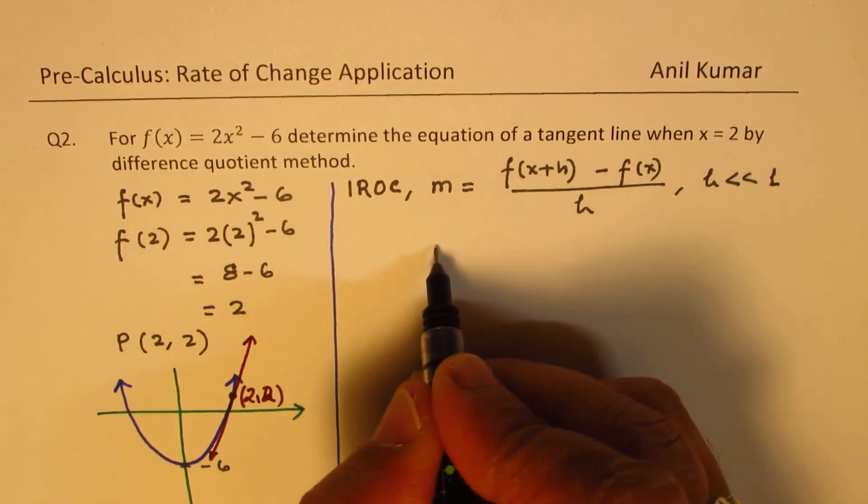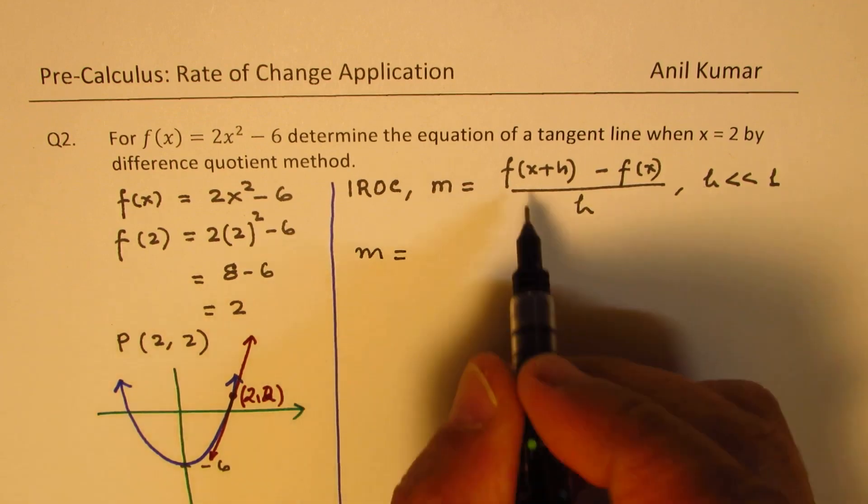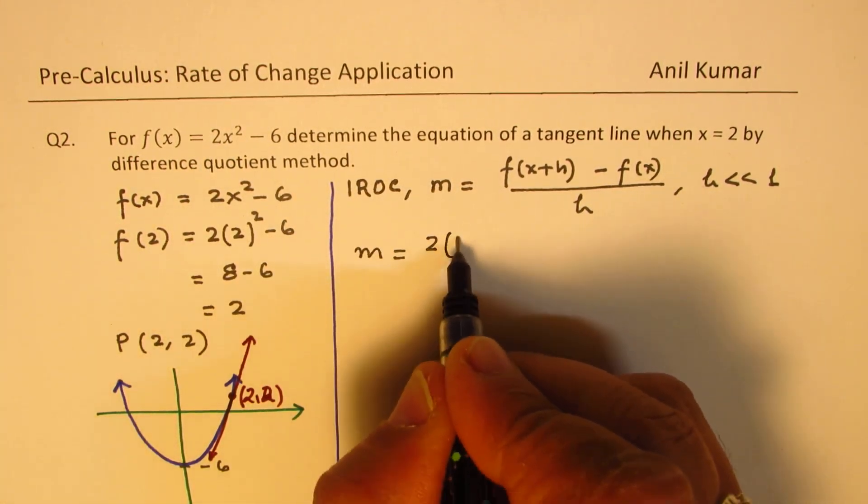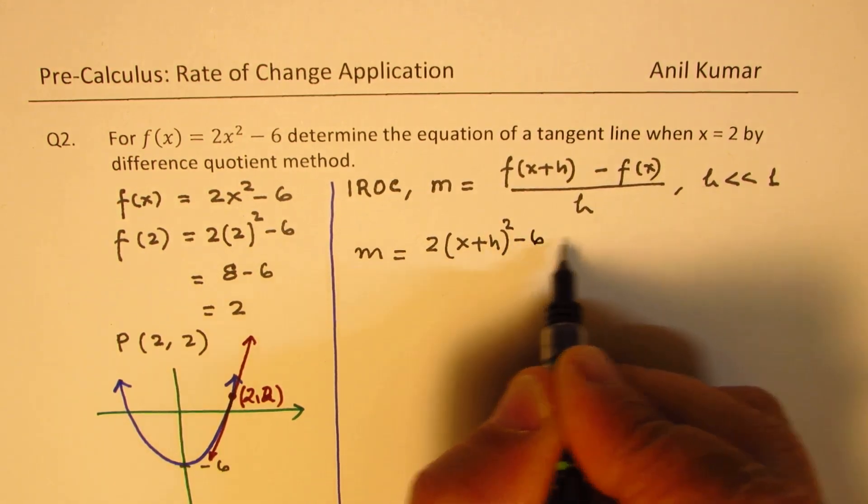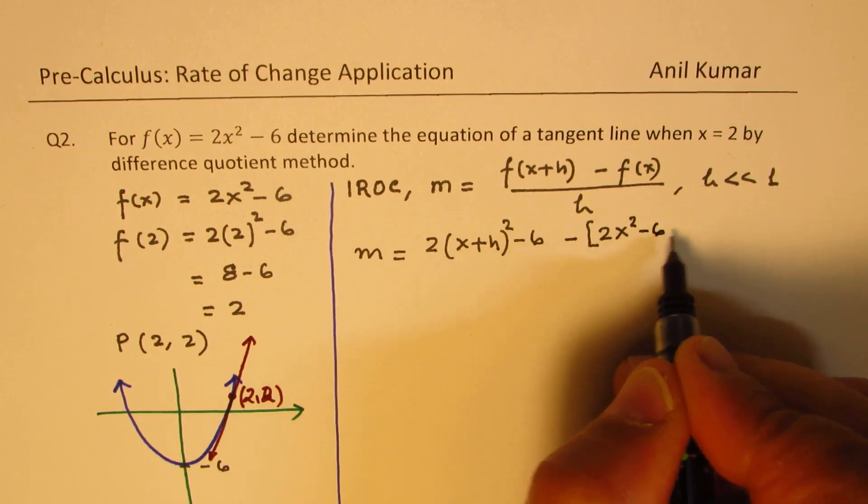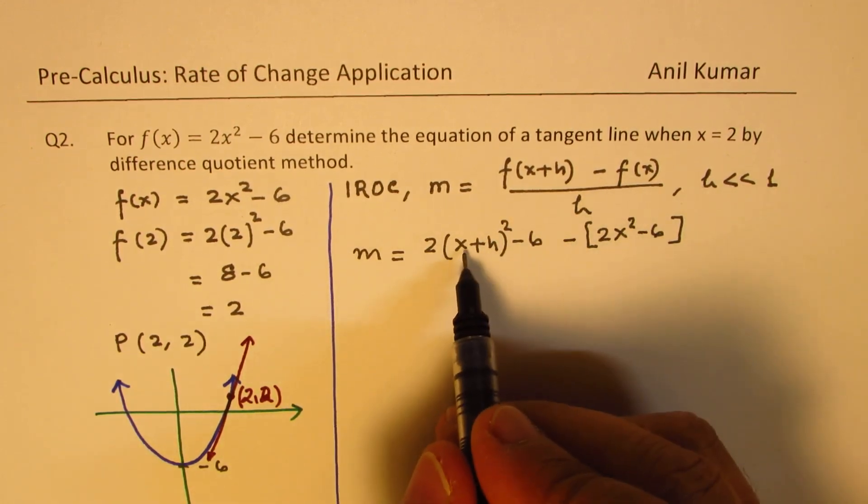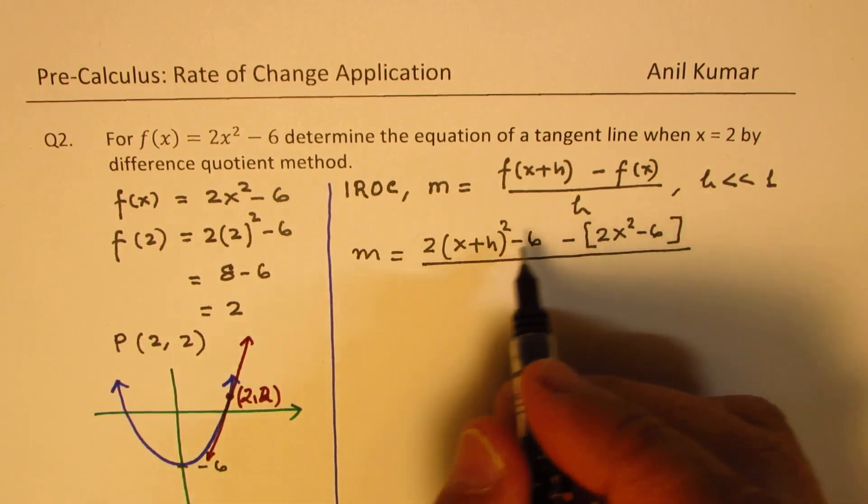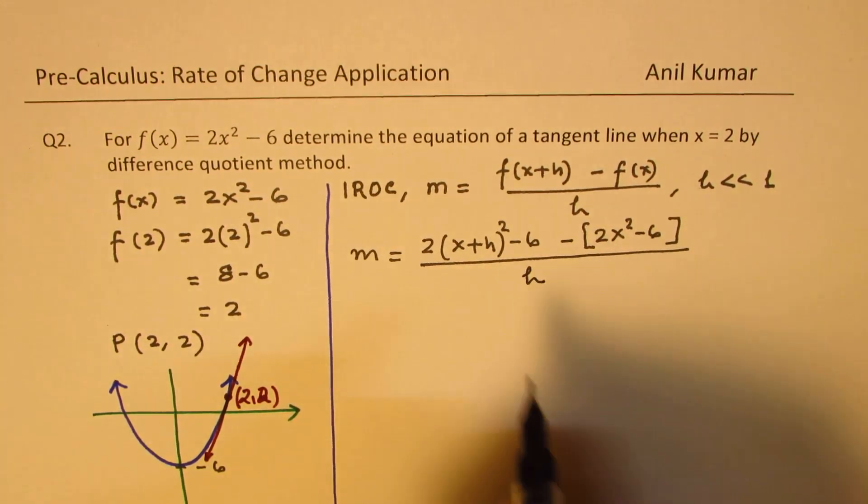So we can say the slope here, m, is equal to, that is the function. So we have this as 2(x+h)² - 6 minus 2x² - 6. I could have substituted 2 here, but this is a general solution.